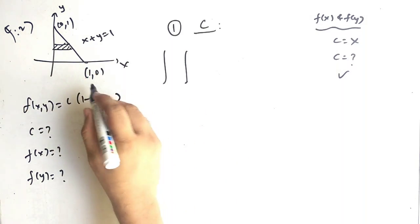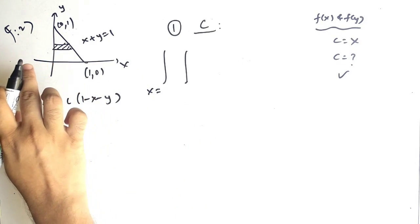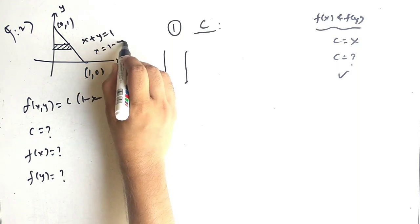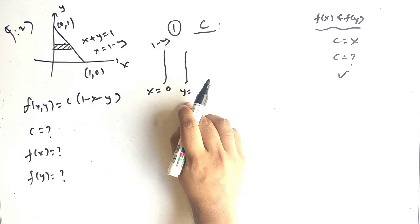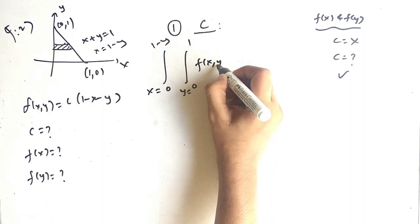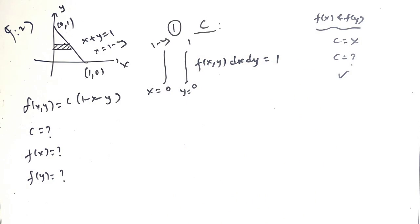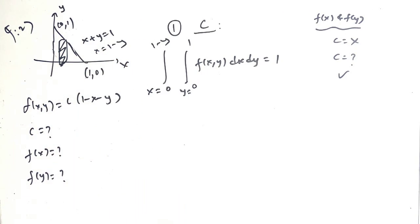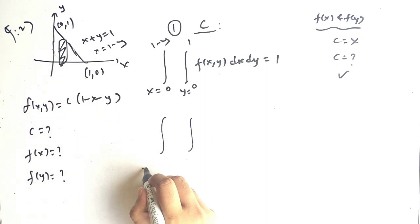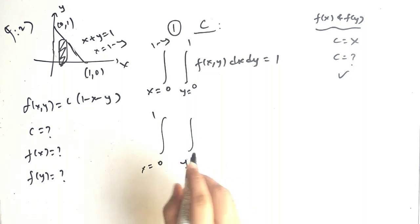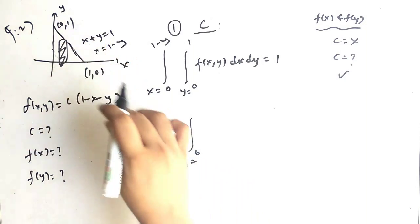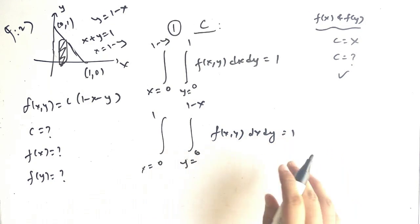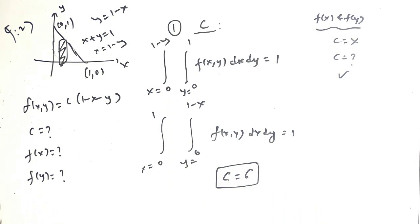For the horizontal strip: x goes from 0 to (1 minus y), and y is a constant from 0 to 1. Setting the double integral of f of x comma y dx dy equal to 1. For the vertical strip: y goes from 0 to (1 minus x), and x goes from 0 to 1. Solving either integral of c times (1 minus x minus y) gives c equals 6.